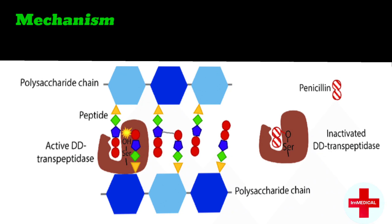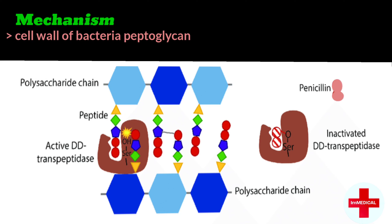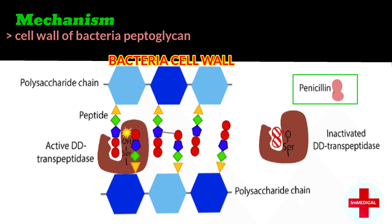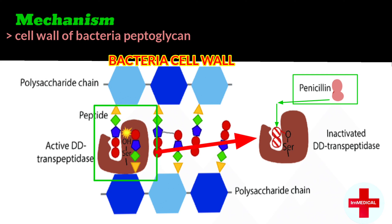The mechanism of action of penicillin drug is as follows. As we know, the cell wall of the bacteria is made up of peptidoglycan. When we use penicillin drug, these penicillin drugs will enter into the bacteria cell wall, where transpeptidase — this enzyme transpeptidase — is present in the cell wall of the bacteria.